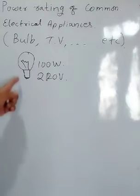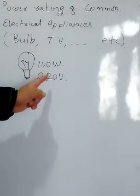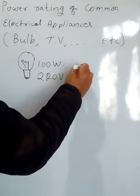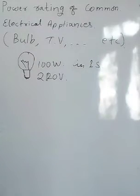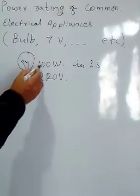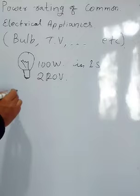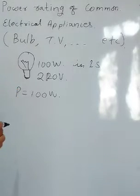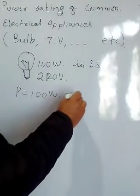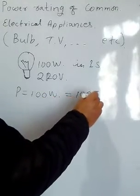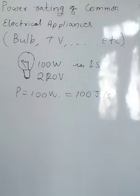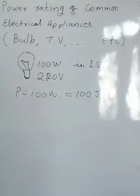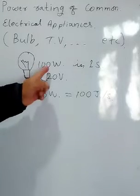100 watt means within one second, its power is 100 watt, or 100 joule per second. Every one second it consumes 100 joule because power is written here as 100 watt.